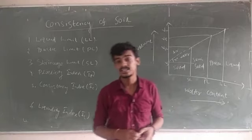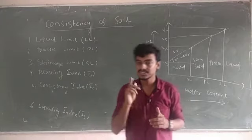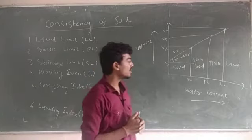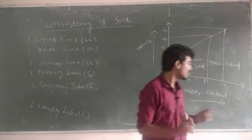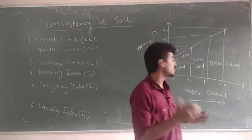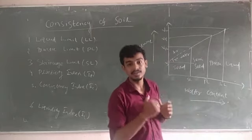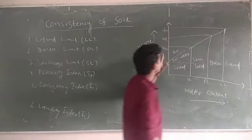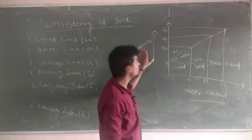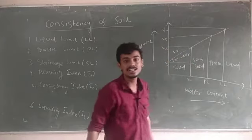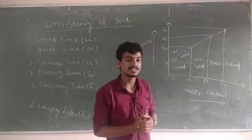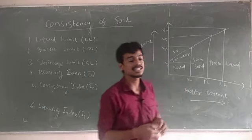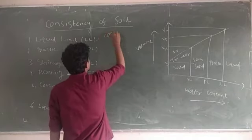Shear strength of soil is covered in chapter eight, so no need to worry about it now. Liquid limit is the minimum water content at which soil changes from plastic state to liquid state. Higher the liquid limit, higher will be the compressibility, because liquid limit is related to volume change and water content.